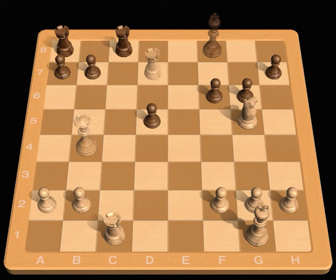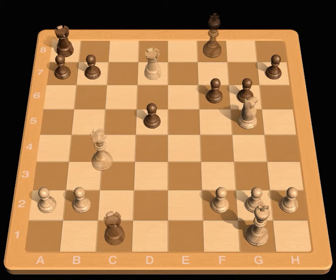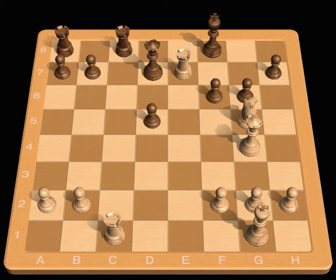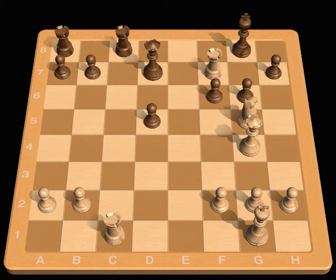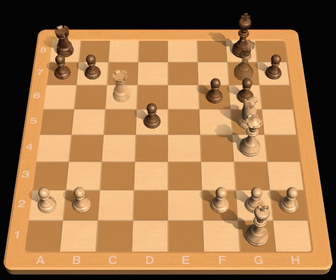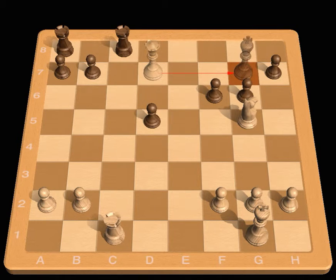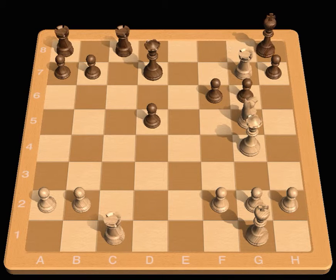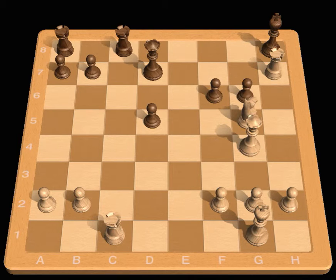Now, if White carelessly grabs the Queen, disaster strikes in the form of back rank mate. Rook f7 check, King g8, Rook g7 check. The Rook is immune from capture. Queen takes g7, Rook takes c8 check wins easily. And King takes g7, Queen takes d7 is check. King h8, Rook takes h7 check.